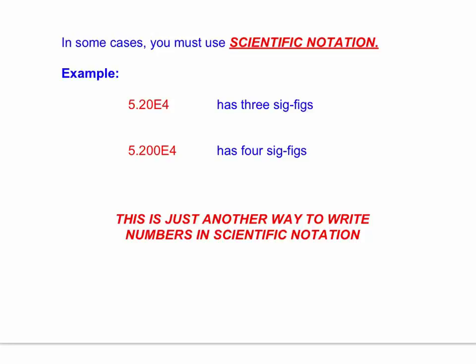You may notice from the web assign that we did earlier that there is another way to show scientific notation. And the way we do that is what we sometimes call e-notation. 5.20 times ten to the fourth can also be shown as 5.20e4. 5.200 times ten to the fourth would be 5.200e4. Again, just a new way to show it, still the same measurement, still the same number of significant figures.